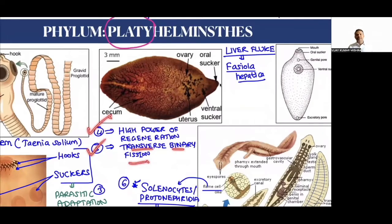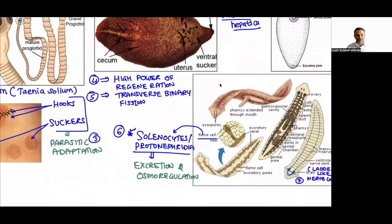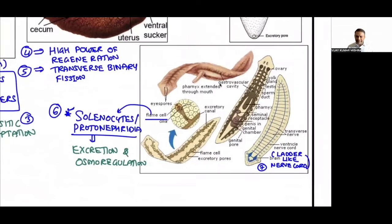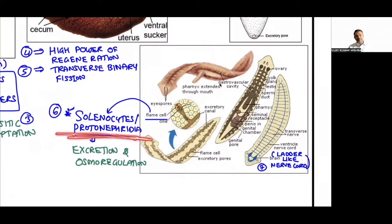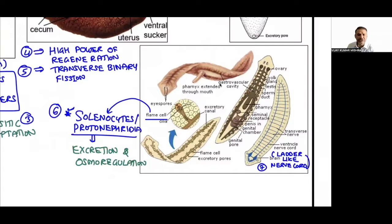Planaria undergoes transverse binary fission. In Planaria, special cells called flame cells are present. These are also called solenocytes or protonephridia. P for Platyhelminthes and P for protonephridia — protonephridia is the star property of this phylum. These flame cells help in excretion (removal of nitrogenous metabolic waste) and osmoregulation (maintaining salt and water balance).